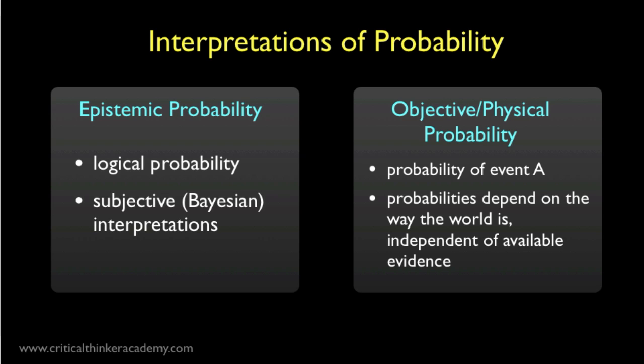But there's another probability concept that we've also been discussing, which some call objective probability or physical probability. This kind of probability is associated with properties of the world itself, independent of available evidence, independent of what anyone happens to believe about the world. For example, when we hear reports of an outbreak of a new flu virus, we're told that in certain regions there's an increased chance of contracting the virus. And if this is true, it's true independently of what anyone happens to believe about the world.